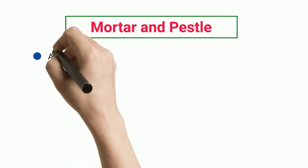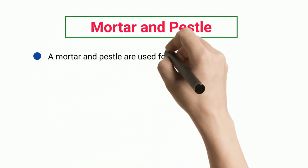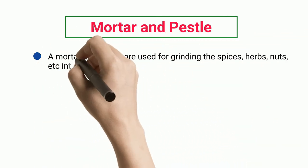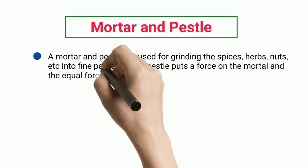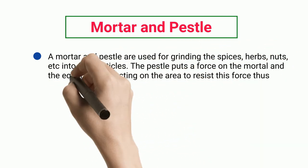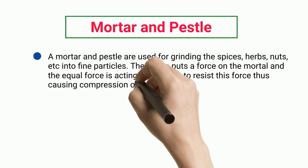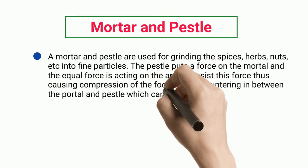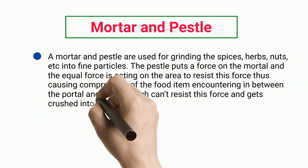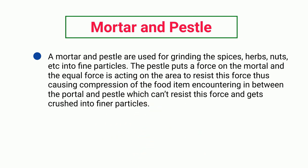Mortar and pestle: a mortar and pestle are used for grinding spices, herbs, and nuts into fine particles. The pestle puts a force on the mortar, and an equal force resists it, causing compression of the food item in between. The food cannot resist this force and gets crushed into finer particles.